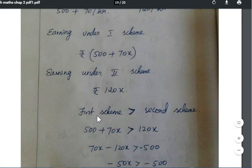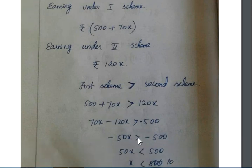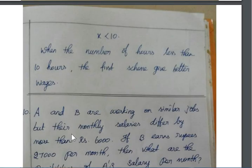The first scheme gives better wages when it's greater than the second scheme. So 500 plus 70x is greater than 120x. This gives 70x minus 120x greater than negative 500, so negative 50x greater than negative 500. Multiplying by negative 1, we get 50x less than 500, so x less than 10. If you work less than 10 hours, the first scheme is better. If you work 10 hours or more, the second scheme gives better wages.